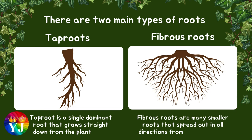A taproot is a single dominant root that grows straight down from the plant's stem. Fibrous roots are many smaller roots that spread out in all directions from the plant's stem.